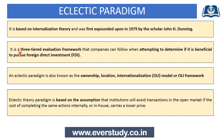In this theory, John Dunning made a three-tiered structure based on the acronym OLI model. The OLI model stands for Ownership, Location, and Internalization. Based on these three factors, John Dunning propounded this theory. It is also based on the assumption that if an institution can avoid transactions in the open market, and the cost of completing the same actions internally or in-house is lower, it will prefer to do so.